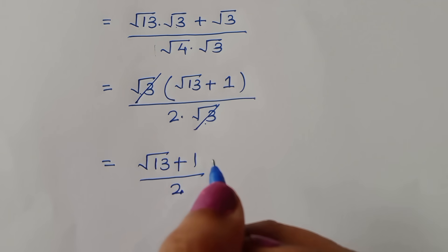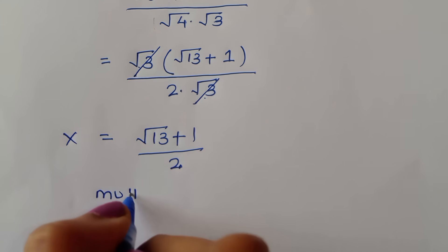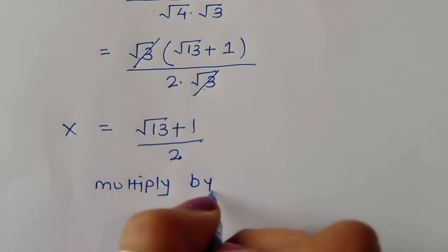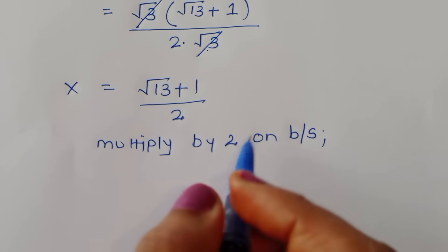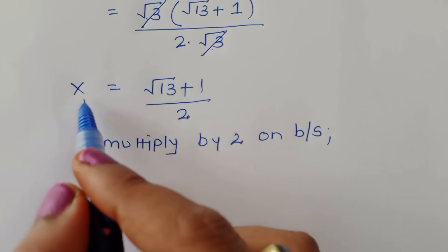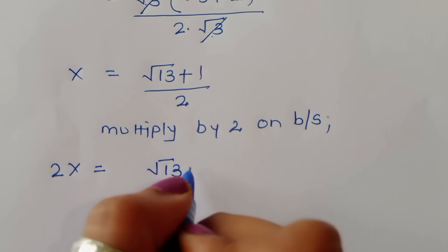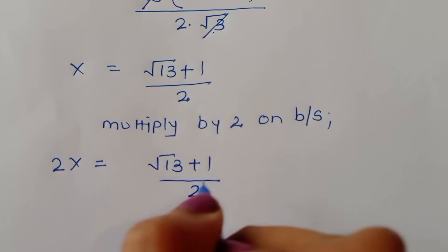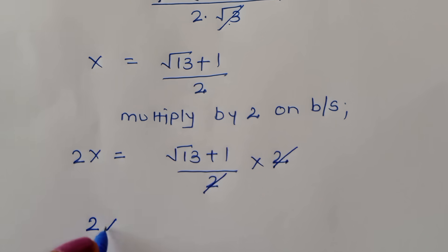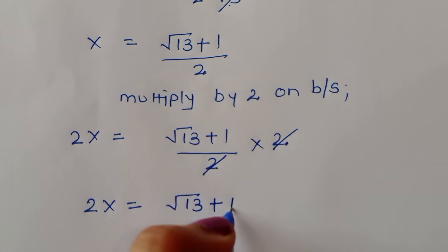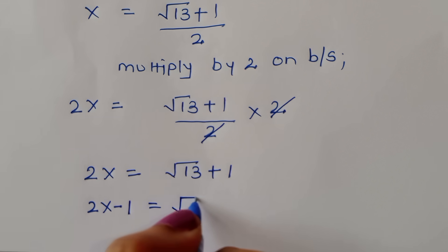Now multiplying both sides by 2, so that 2x = √13 + 1. Rearranging, we get 2x − 1 = √13. This is the simplified form of x that we will use going forward.